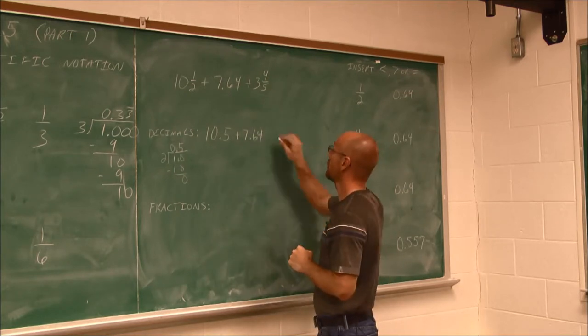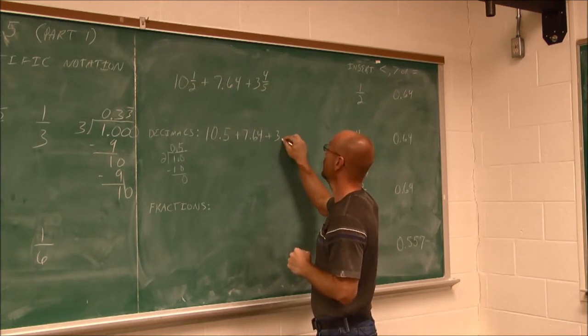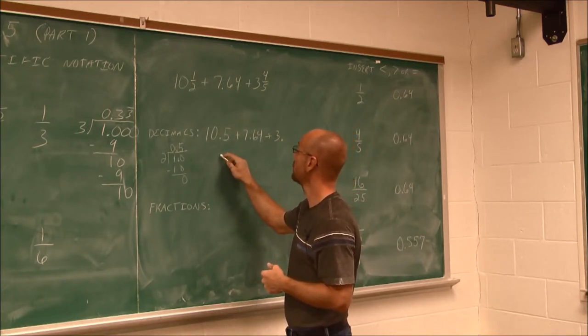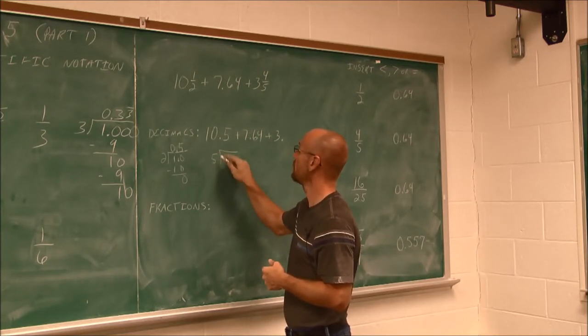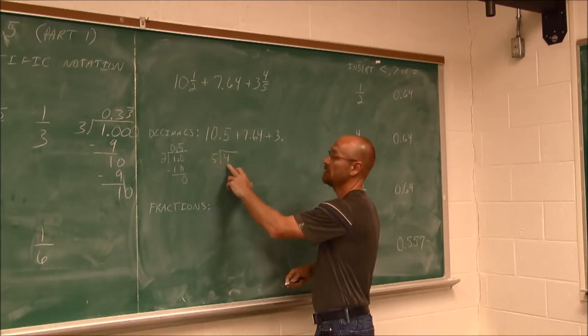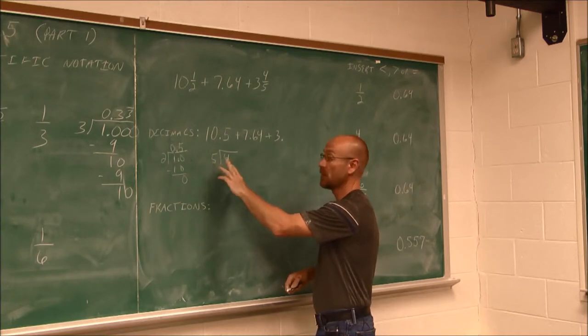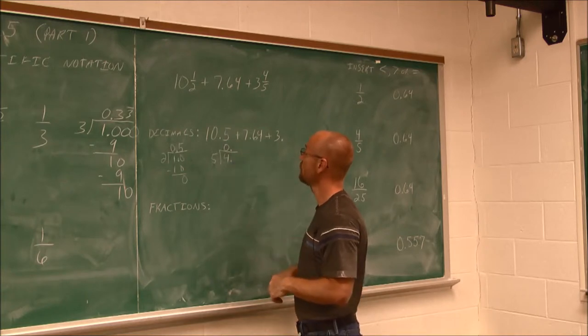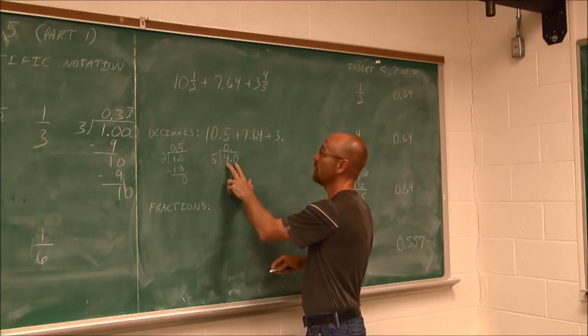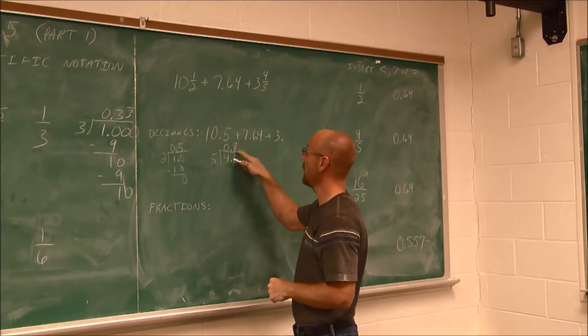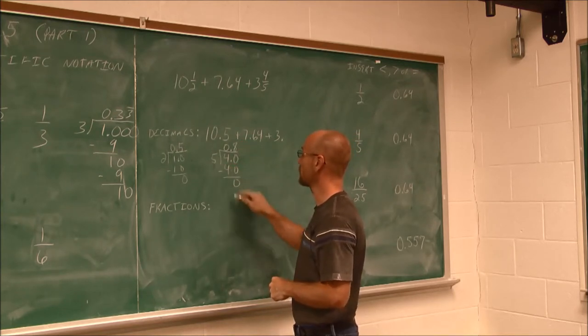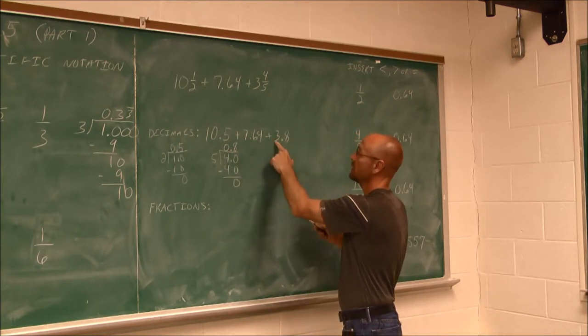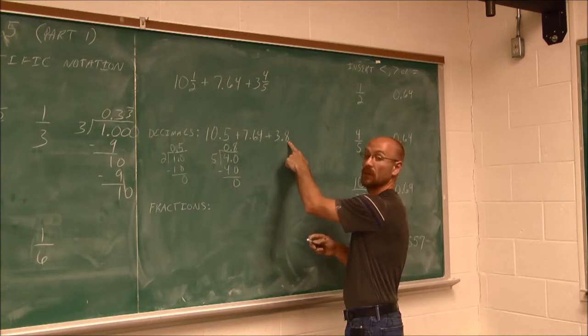What about 3 and 4 fifths? This is going to be 3 point whatever that 4 fifths decimal is. We have 4 being divided by 5. 5 doesn't go into 4, so I introduce my decimal. 5 goes into 40 eight times. 8 times 5 is 40. No remainder. So 0.8. It would be 3.8. We take the whole, and then we convert the fraction to a decimal.